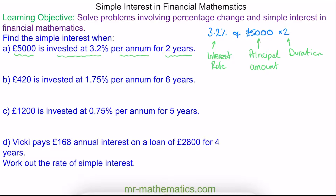To work out our simple interest at the end of two years, we convert the percentage into a decimal: 3.2 divided by 100, which is 0.032. This — 'of' meaning times — the principal amount of £5,000, multiplied by a duration of two, gives us £320. This is the total interest we receive over a period of two years.